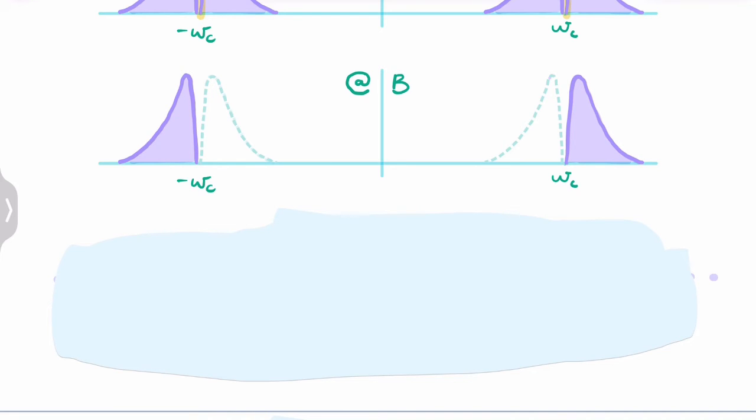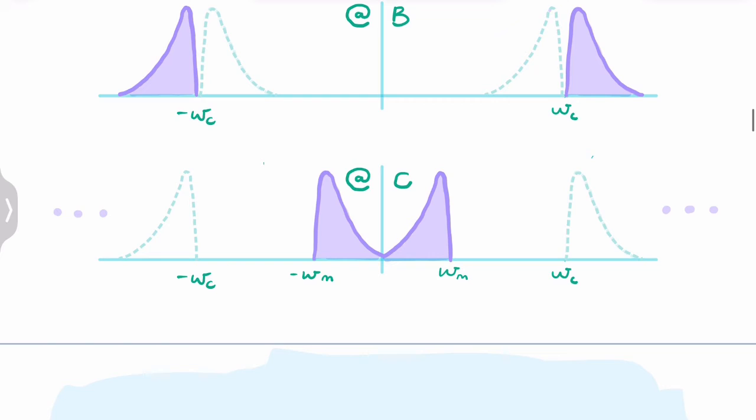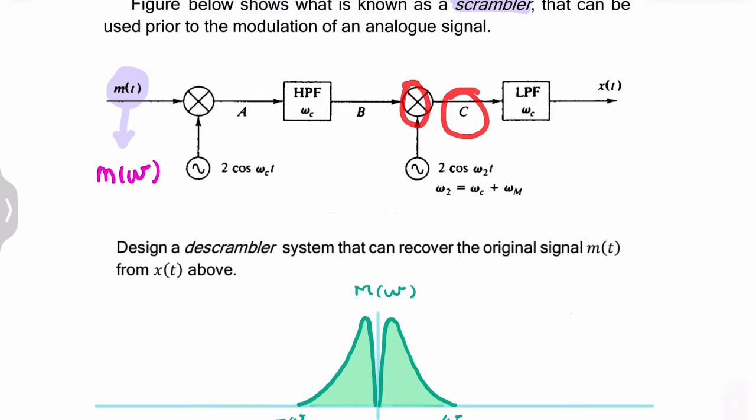You would essentially have this shifted to there and this shifted to there. This would also be shifted in the negative direction and this in the positive direction. So you'd still have higher frequency components, but essentially this maps to there and this maps to there. That's at C, which is after the multiplier.